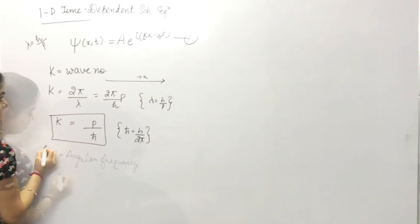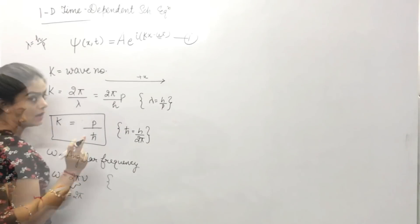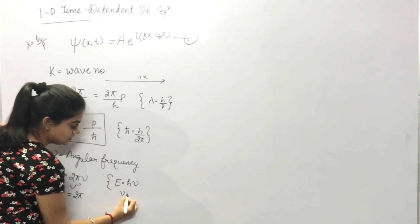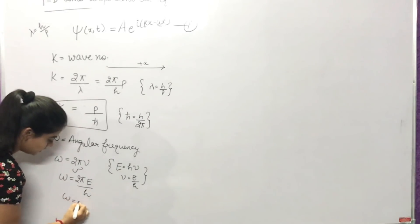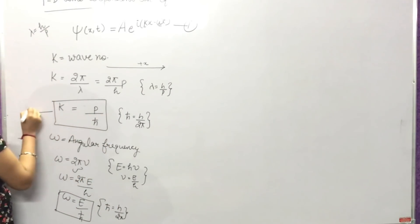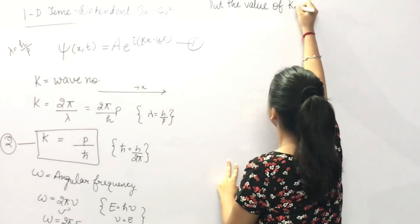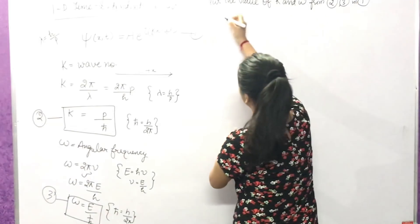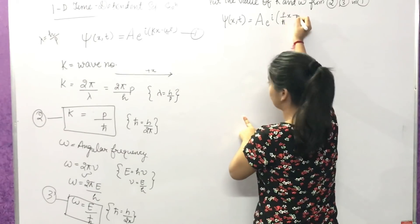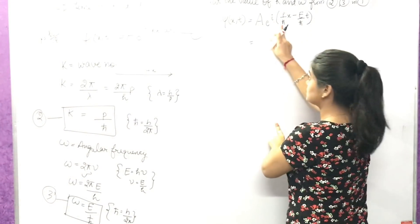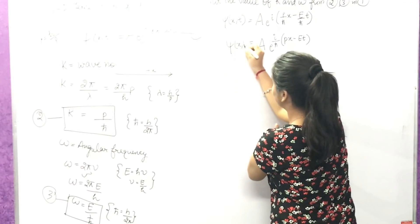Using Planck's theory, E equals h nu, so nu equals E upon h. Substituting, omega equals 2pi E upon h, and since h-bar equals h upon 2pi, omega equals E upon h-bar. Substituting the values of k and omega, the wave function Psi(x,t) becomes A e to the power i upon h-bar times (px minus Et). This is the wave function for a particle moving in the x direction.